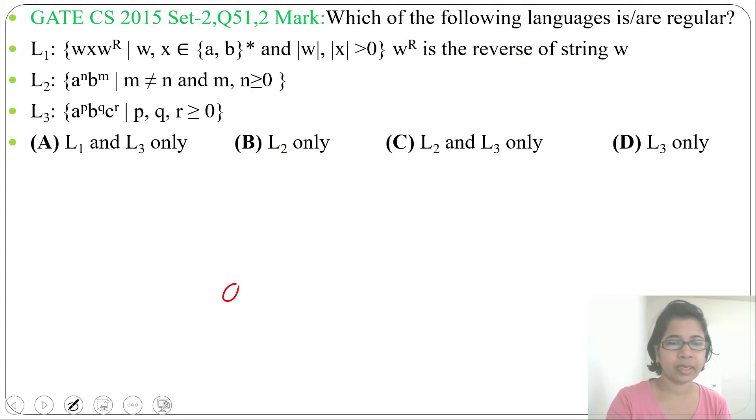Let W equal ABB, then let X equal BA, then W reverse will be BBA. So this is our W, this is our X, this is our W reverse. Now what we can do is extend this X up to this level, and here you can extend this X up to this level. You can convert this language into start and end with same symbol. Here you can say start with A and end with A.